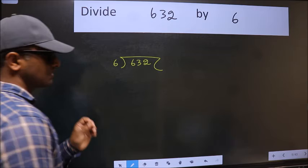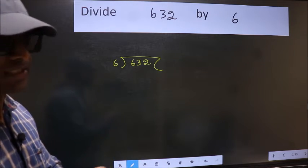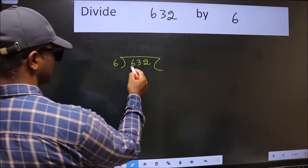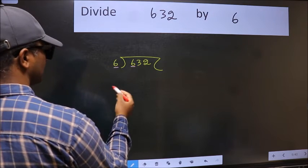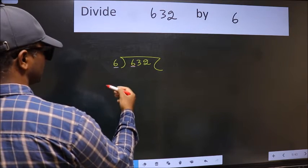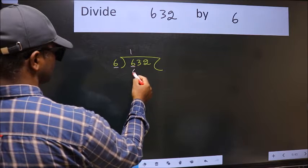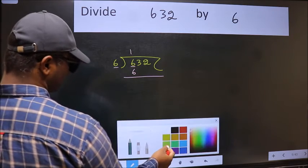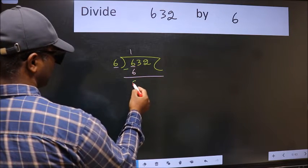This is your step 1. Next, here we have 6 and 6 here. When do we get 6 in 6 table? 6 once 6. Now we should subtract. We get 0.